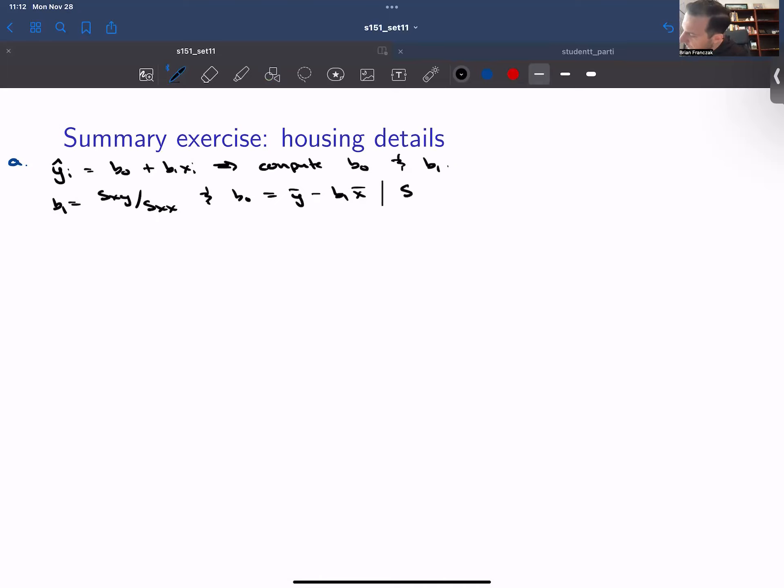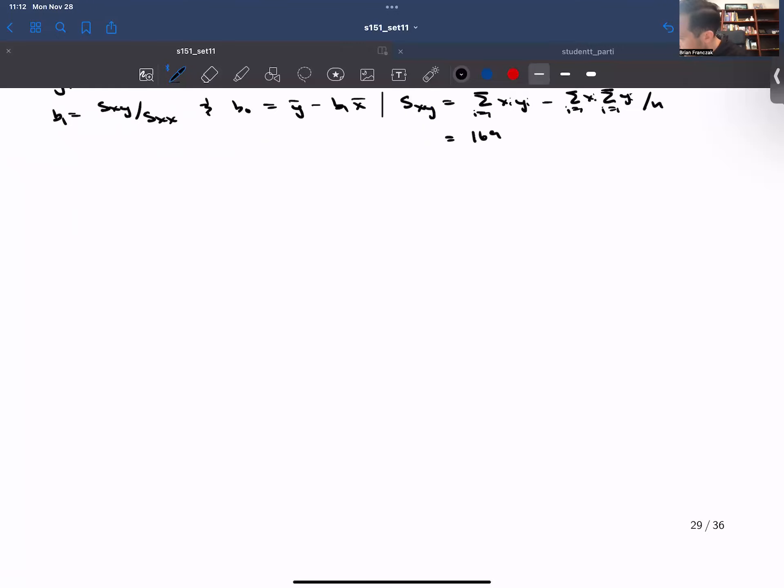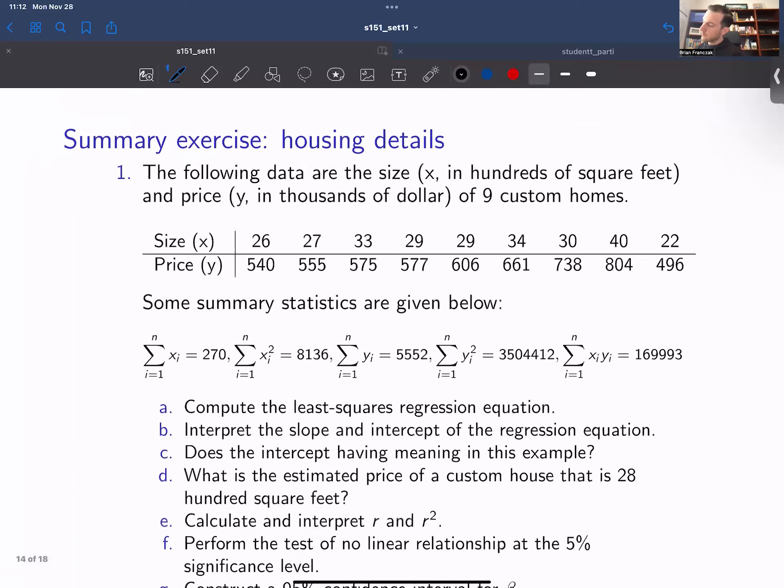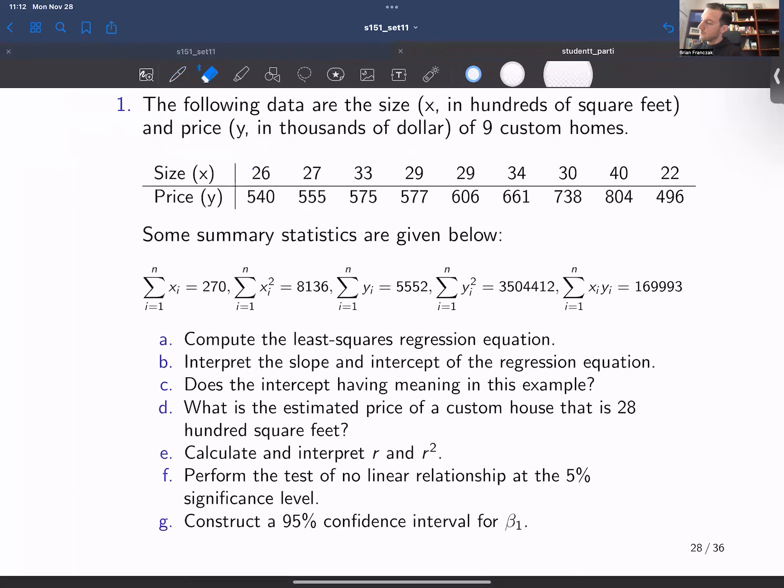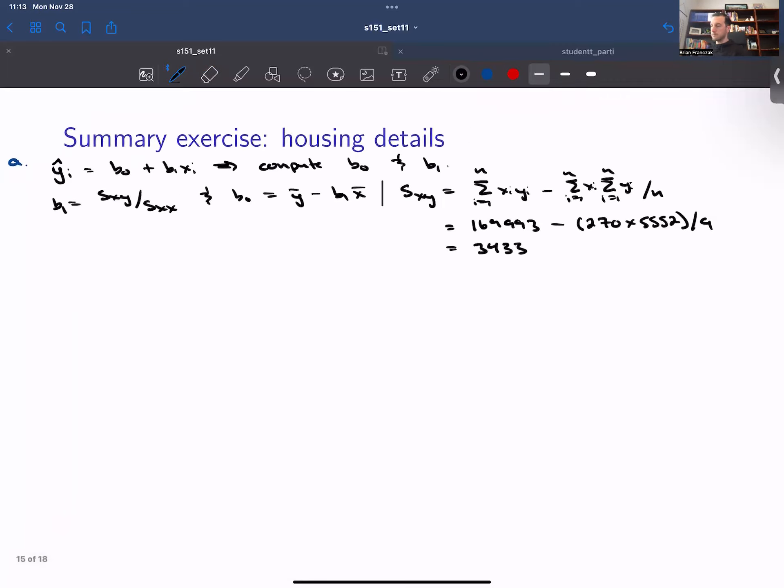So sxy is the sum from i equals 1 to n of xi yi minus the sum from i equals 1 to n of xi, multiplied by the sum from i equals 1 to n of yi divided by n. So from the previous slide, this is going to be 169,993 minus, and then we need our two sums, 270 and 5552, and then only this part is going to be divided by n. And this should give us 3,433.